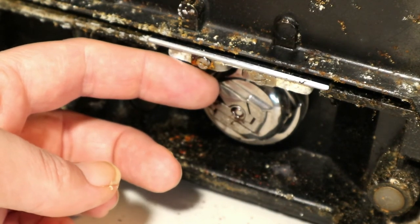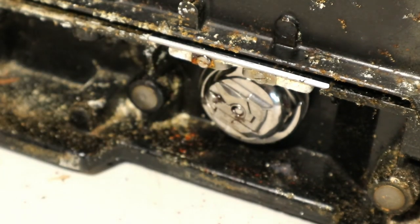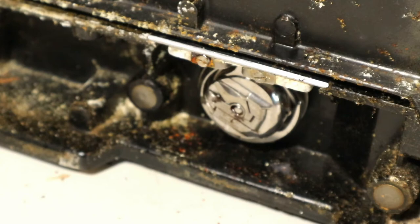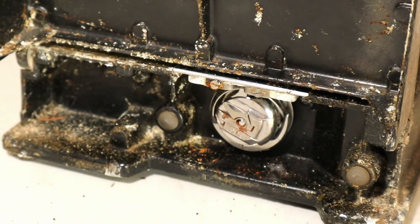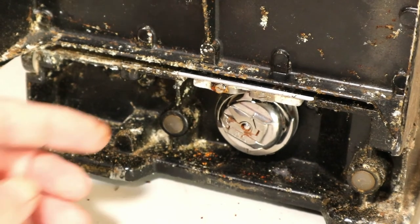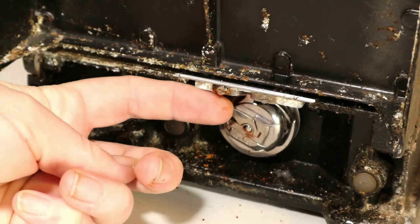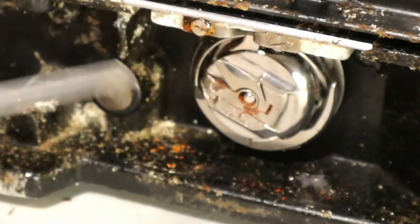Ah, perhaps the most fragile part of the whole machine, and of course it's going to be the part that's stuck. What is supposed to happen is I pull on this lever, and part of this slides to the right point and releases the bobbin case from the machine.